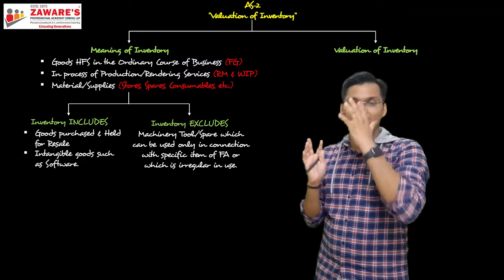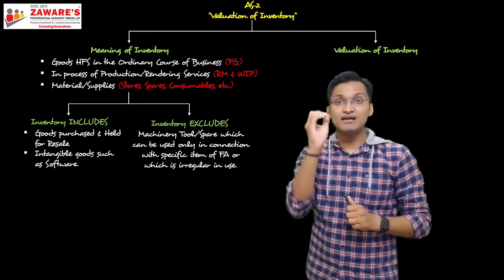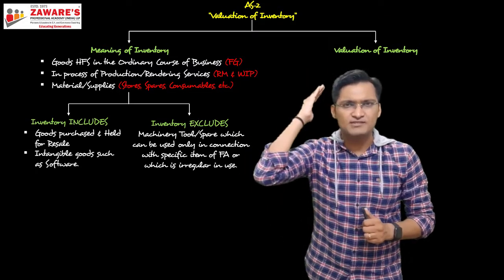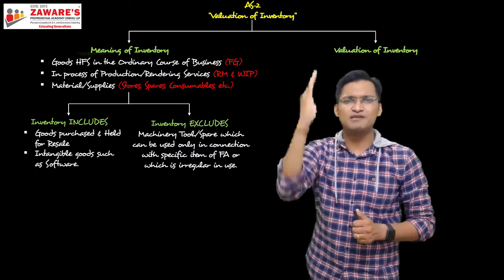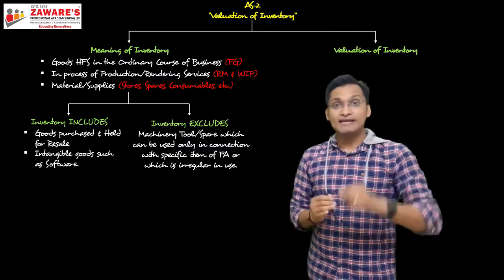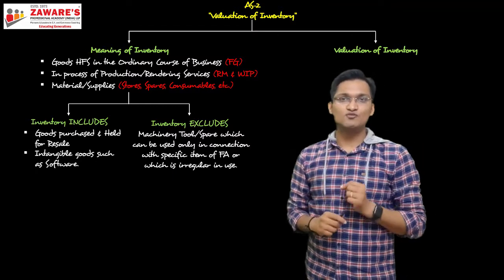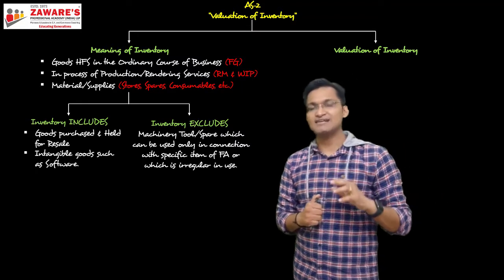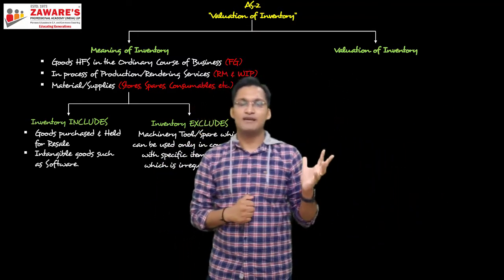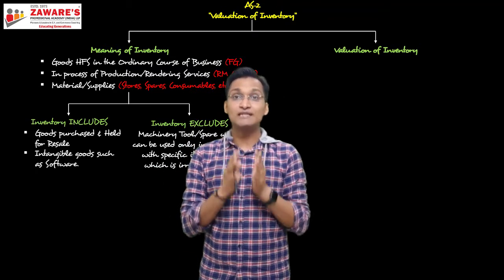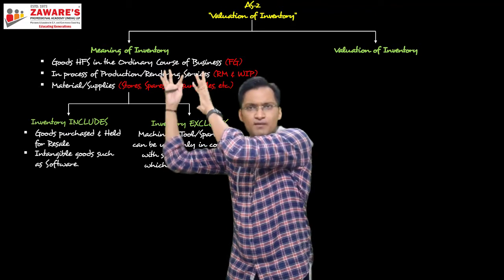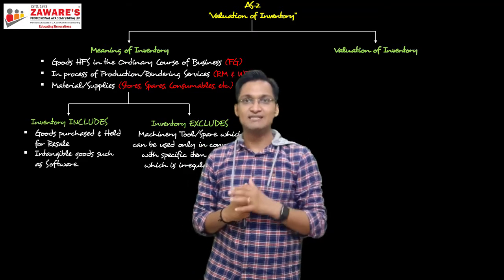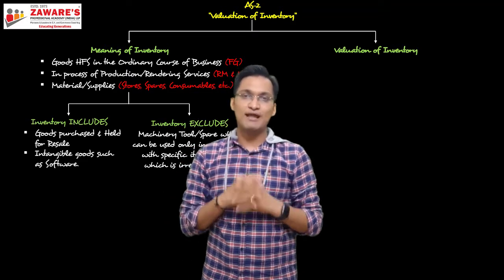Now we come to the second part of this standard: valuation of inventory. We've already understood what inventory is — now we'll see how inventory is valued. This is not new to us, because we've seen it since 11th standard in final accounts questions, where the first adjustment would mention the cost of closing stock and the market price of closing stock — and our teachers told us to take whichever is lower.